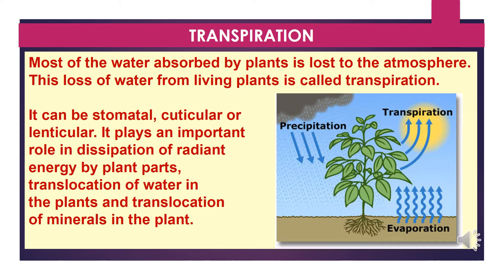Now we will discuss transpiration. Most of the water absorbed by plants is lost to the atmosphere. This loss of water from living plants is called transpiration. It can be stomatal, cuticular, or lenticular. Transpiration plays an important role in dissipation of radiant energy by plant parts, translocation of water in plants, and translocation of minerals in the plant.